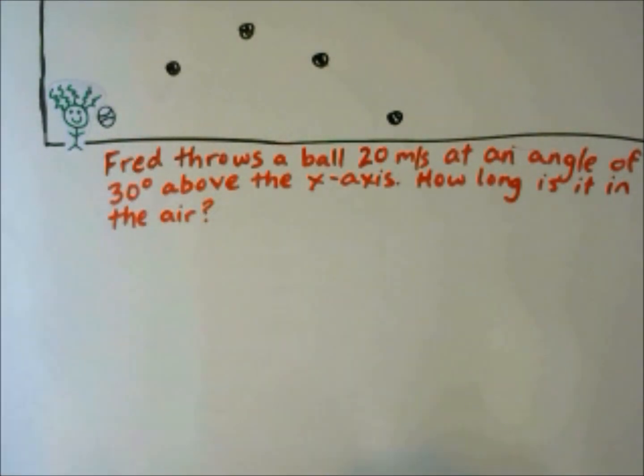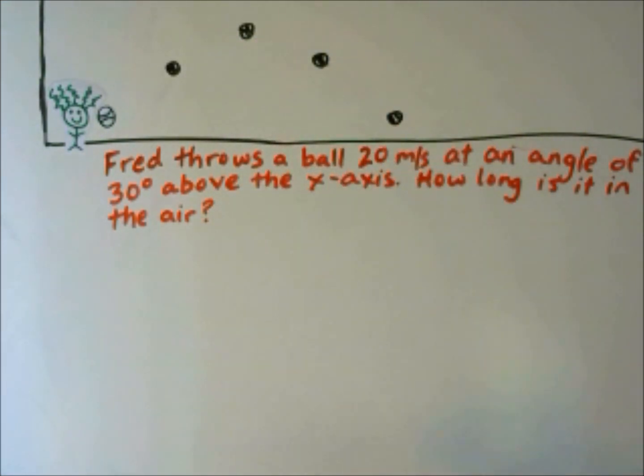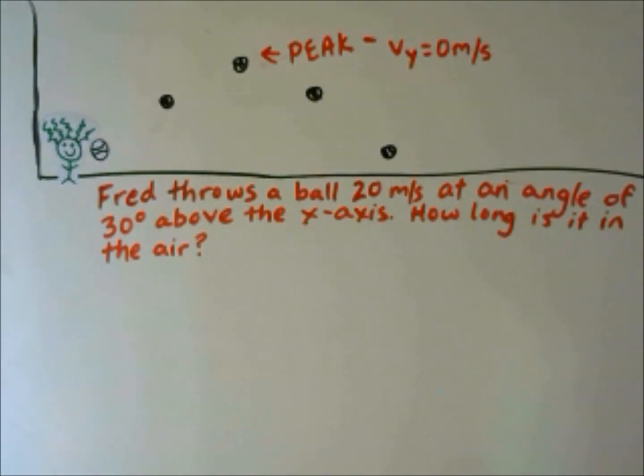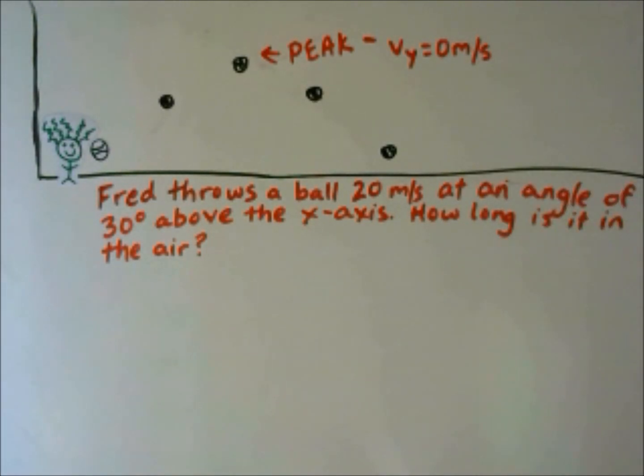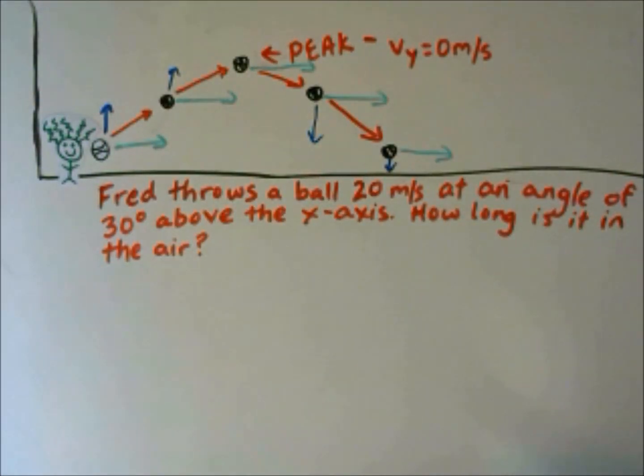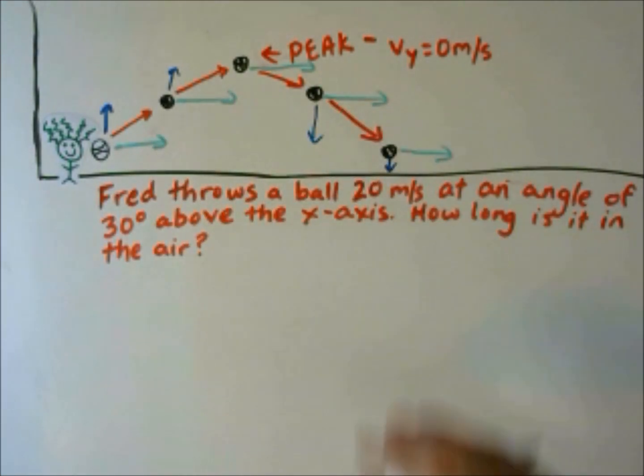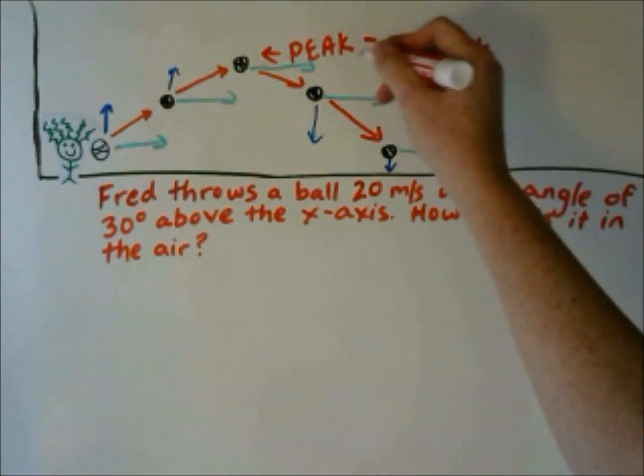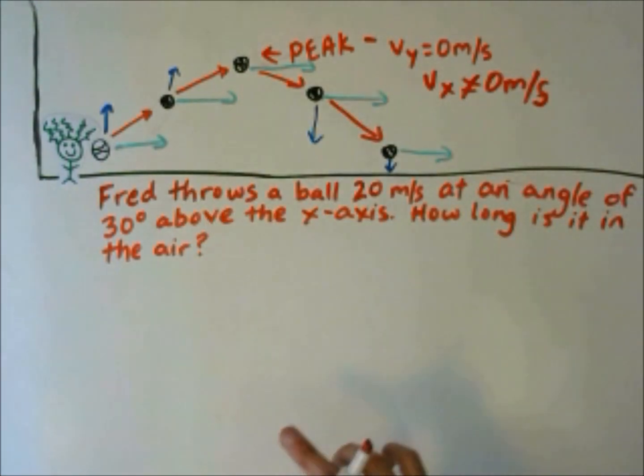A projectile that is thrown vertically or at an angle will go upward until it reaches a peak and then it will fall back down. At the peak, the y-velocity is at 0 meters per second. You'll notice that the x-velocity, just like in a horizontal projectile, doesn't change because it has no acceleration. At the peak, the velocity in the x-direction is not equal to 0 meters per second. It still has velocity in the x-direction.